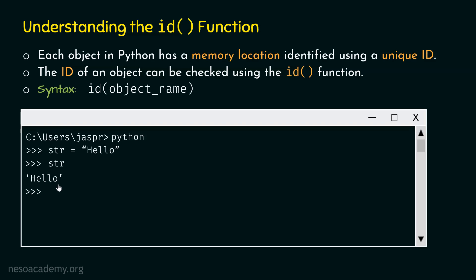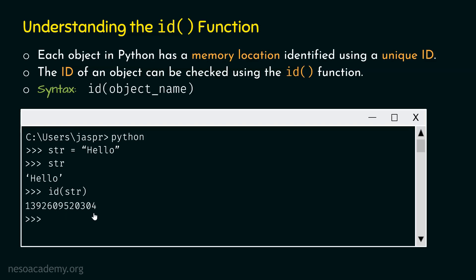Now we want to know the id of the string 'hello'. We can check it by passing str to the id function — id(str). str is the name pointing to the string 'hello'. If we hit enter, we get the id 1392609520304. This id can be different on your computer. This id is unique to this object — it is the id of the object 'hello', not the variable str.